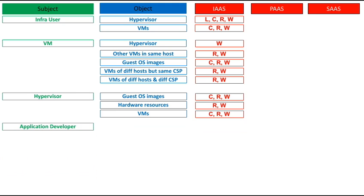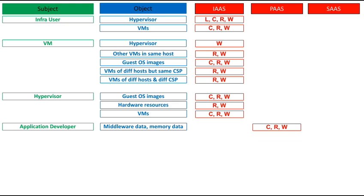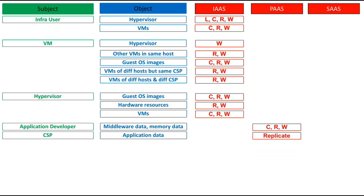With regards to VMs, a hypervisor can create new VMs and read and write to existing ones. For the Platform as a Service model, the application developer — the customer of PaaS — can perform read, write, and create operations on the middleware and also on the memory data of the virtual machine. The cloud service provider in PaaS can also replicate or perform backup operations on the application data.